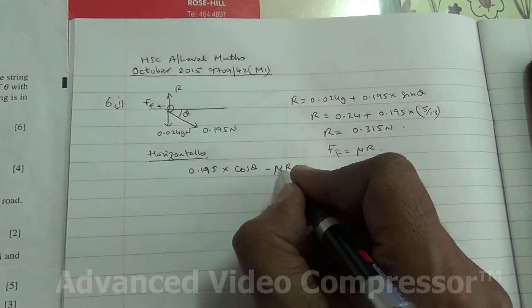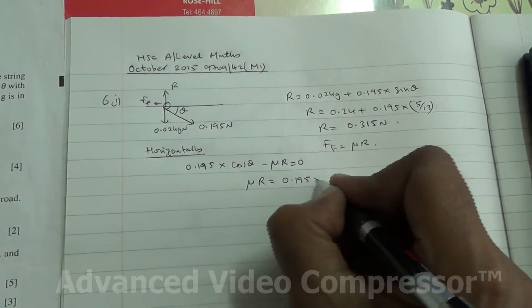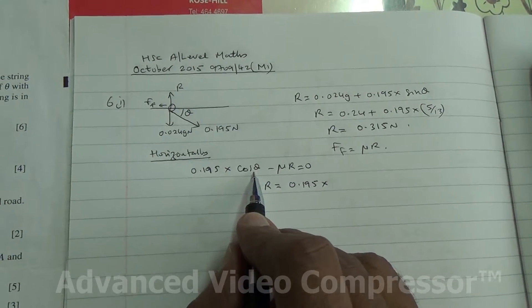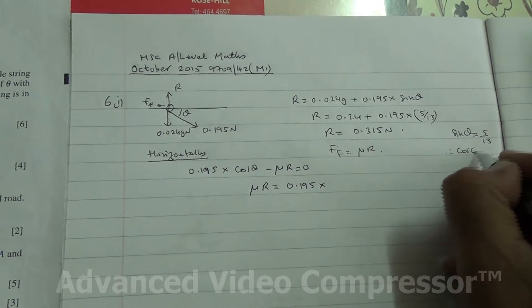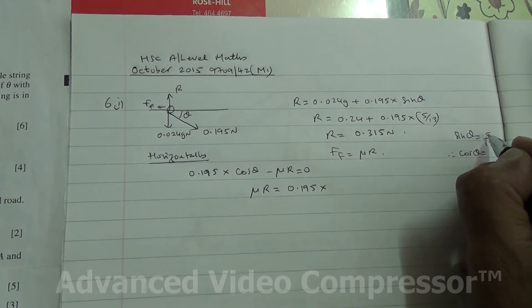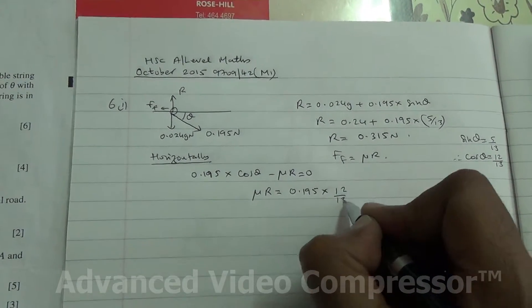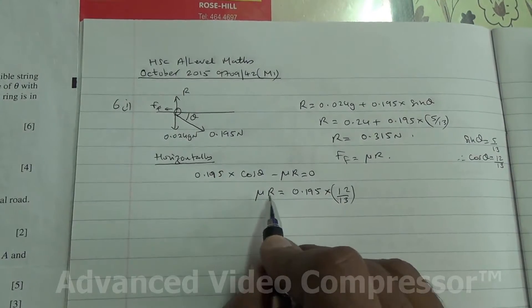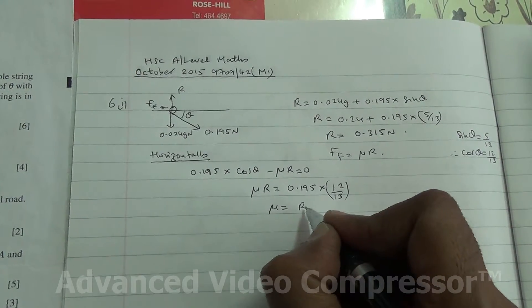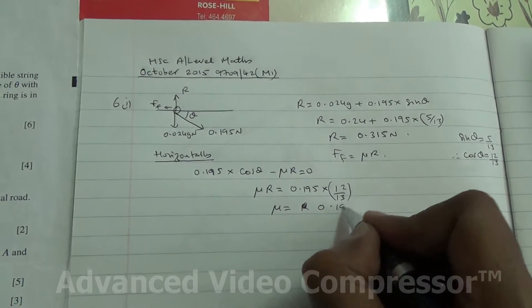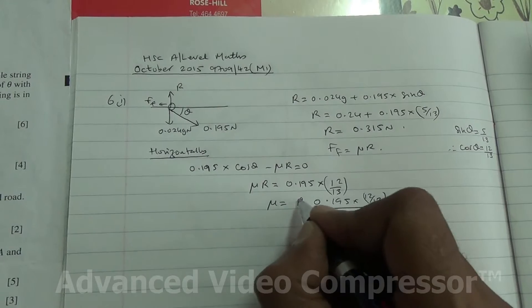So we need to find coefficient of friction. This can go on the other side. So we've got then mu R is equal to 0.195 times cos of theta. Now we know that sine of theta is 5 over 13, therefore cos of theta is going to be 13 squared minus 5 squared is 144, and the square root of that is 12, and then it's over 13. So times 12 over 13, and now we need to find the coefficient of friction. So mu is going to be 0.195 times 12 over 13, and all divided by R.